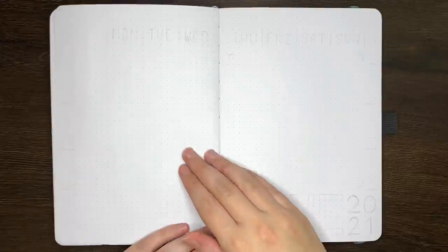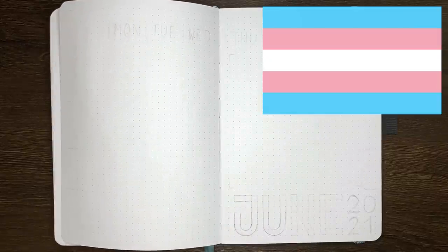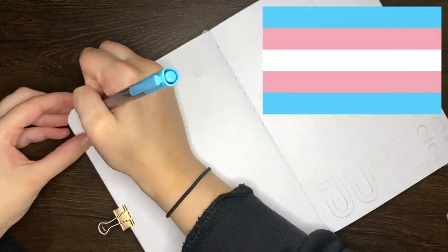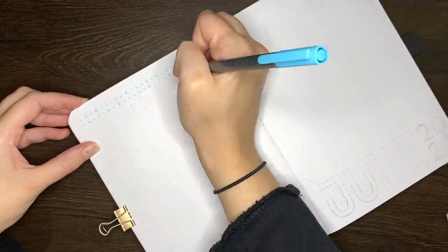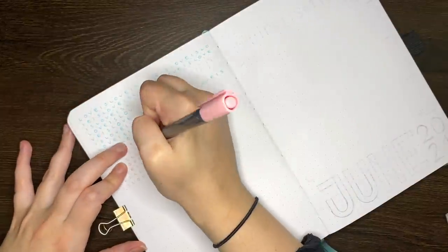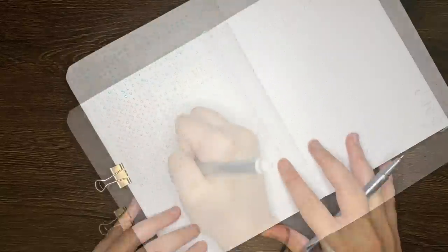Over the page, we're onto the monthly log. The design of this one was inspired by the transgender pride flag, with the pale blue, pale pink, and white stripes. I decided to use this one here, as the number of stripes fitted with the number of weeks in the calendar.